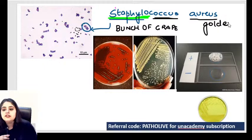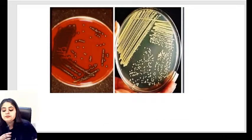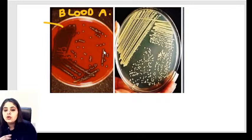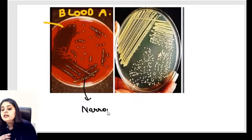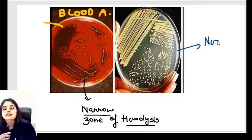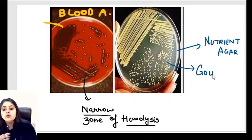Two media are shown. On blood agar, Staphylococcus shows only a narrow zone of hemolysis — blood is broken in a very narrow zone. On nutrient agar, a colorless medium, it produces a yellow golden pigment. This golden pigment is called staphyloxanthin.